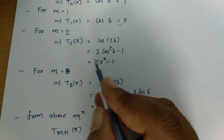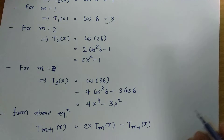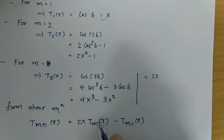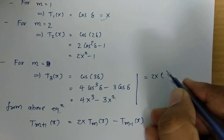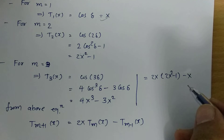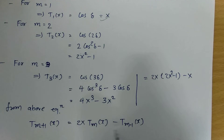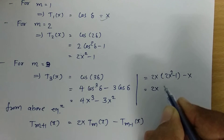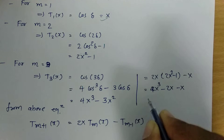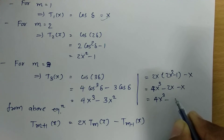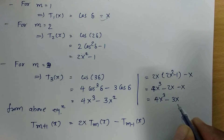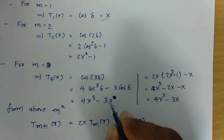For T3 of x, cross-verifying using the recurrence: it equals 2x times T2 of x, which is 2x squared minus 1. This results in 4x cubed minus 2x minus x. I made a mistake earlier — since cos delta is x, it should be 3x, giving 4x cubed minus 3x.